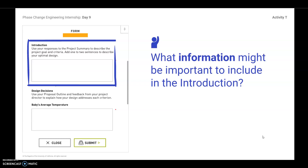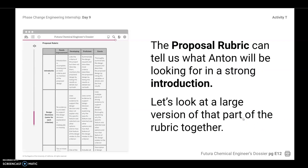All right. Something that you probably brought up were the criteria. We had three main criteria that you needed to make sure that you included, so you probably want to discuss that in your introduction. The proposal rubric can tell us what Anton's going to be looking for to find a strong introduction. If you look at the one you have in your packet — you also have this in your email — it will tell you that if you want to excel at your introduction, you want to summarize the design request and describe the proposed design by listing the variables or details and the final results.